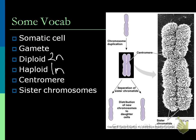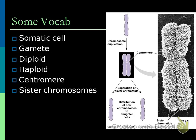The centromere is this pinched part area, and that's where the two sister chromatids actually join together. Whenever we talk about a chromosome, that's one chromosome. But most of the time you'll see it doubled - those are sister chromatids. That's the doubled version. When you look at karyotypes, they have all the doubled chromosomes. The genome is all your genes in one long line - it's like your recipe.